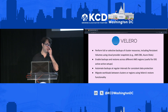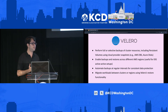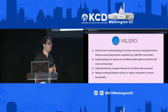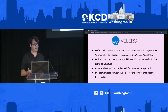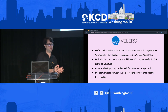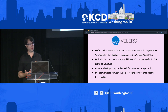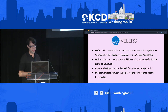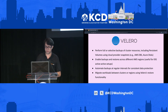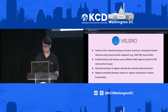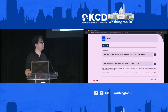Another thing Velero helps with is cluster migration. Sometimes disaster recovery also involves cluster migration — you can use Velero to take a snapshot of your current production, then spin up a new EKS cluster on the latest version and migrate fully into production. To install it, you head to the Helm repository and install the Helm chart.